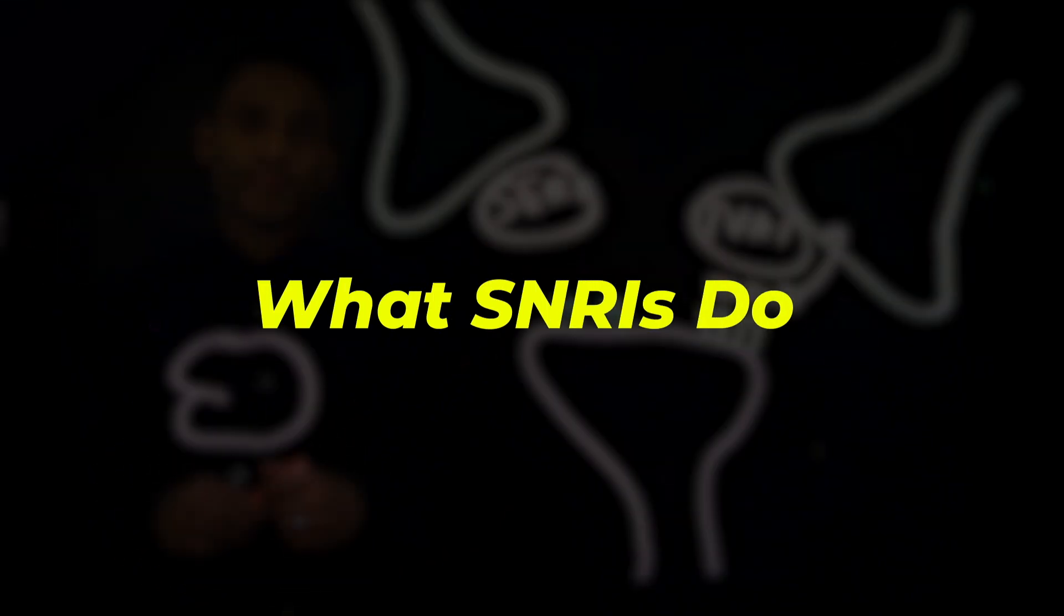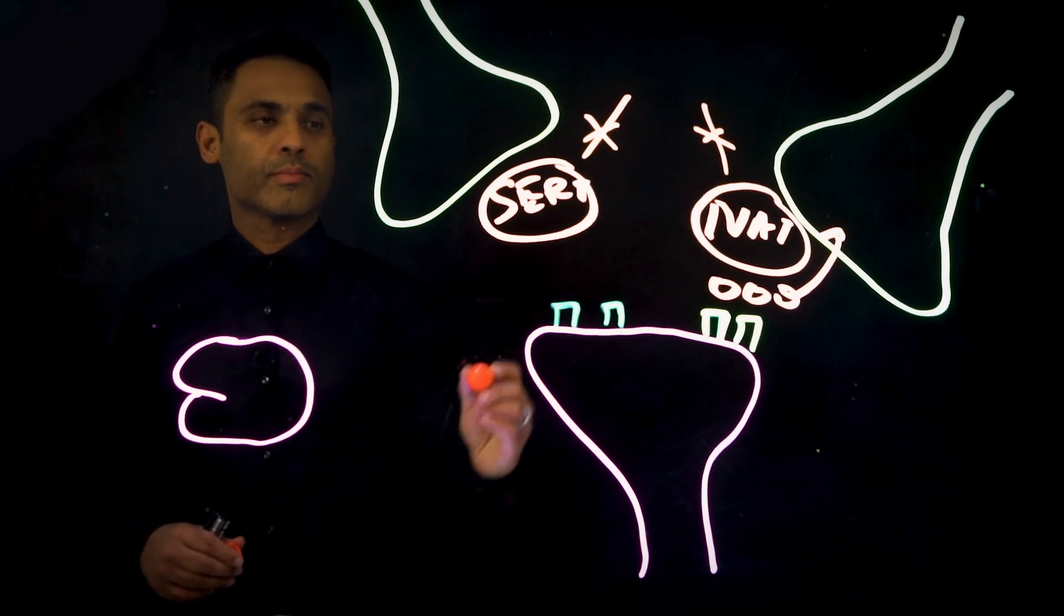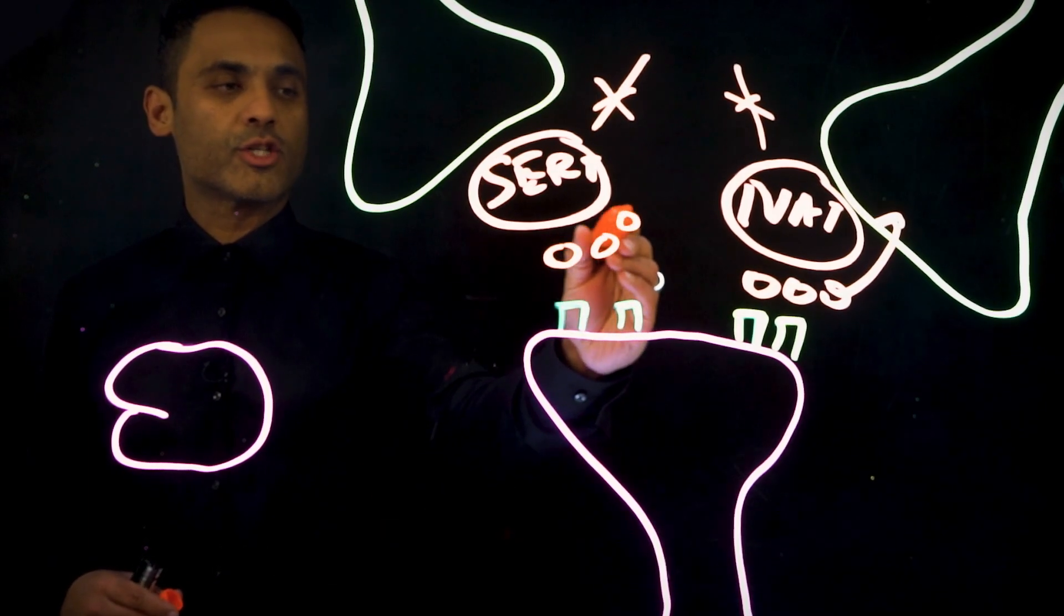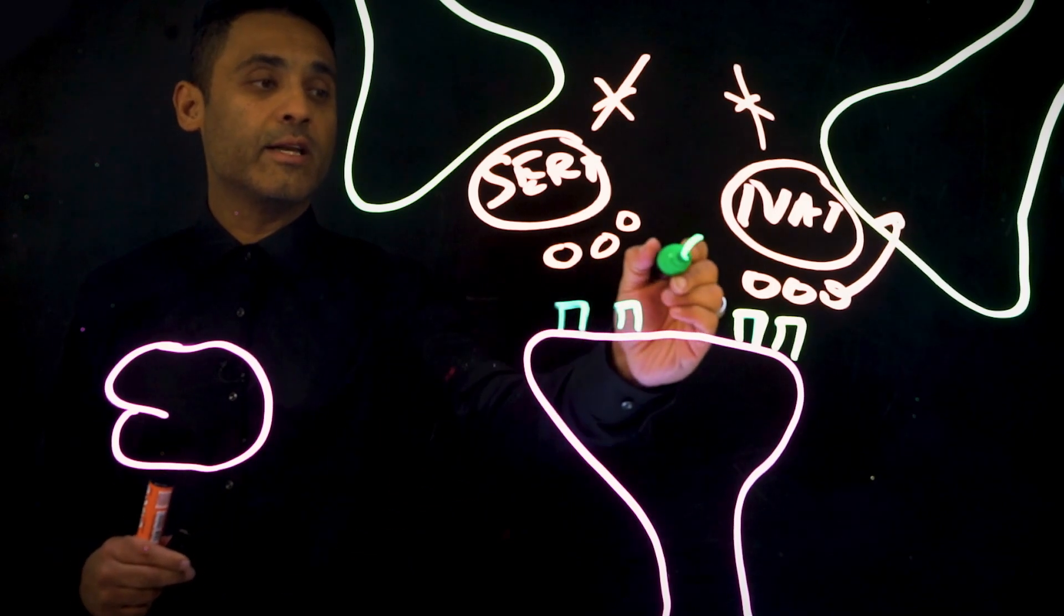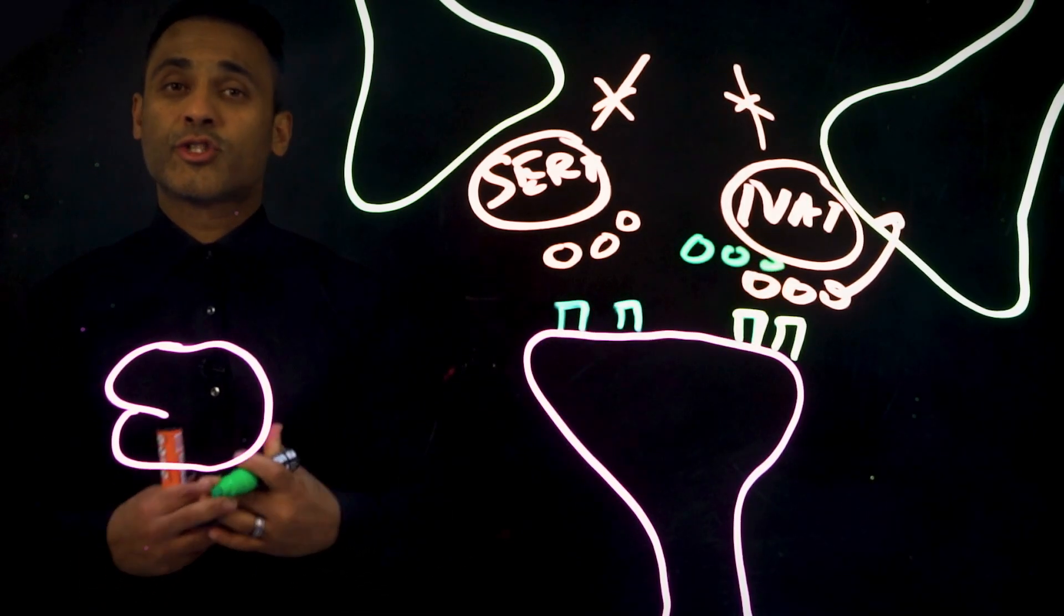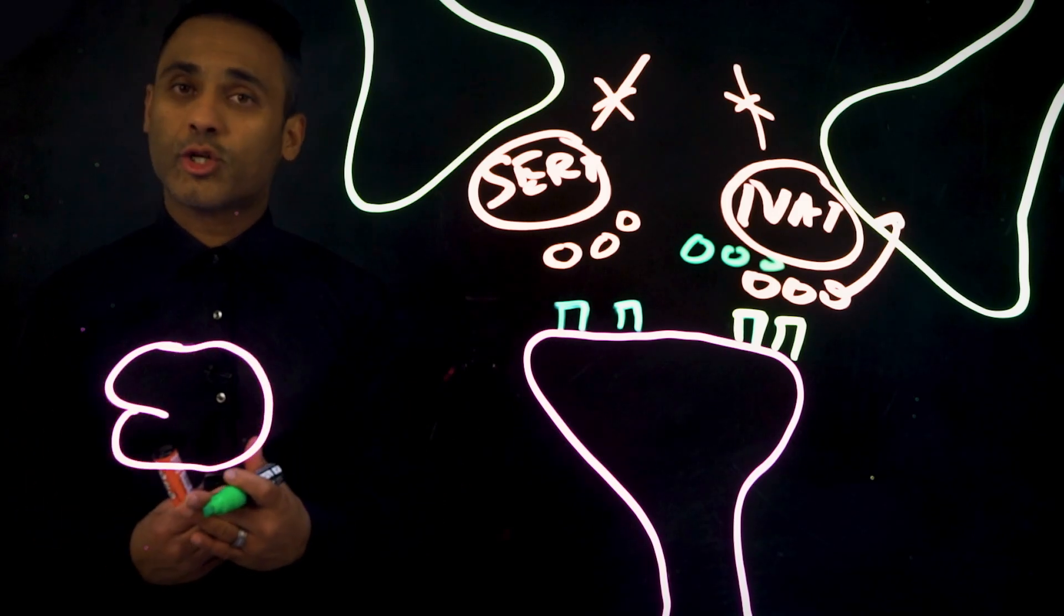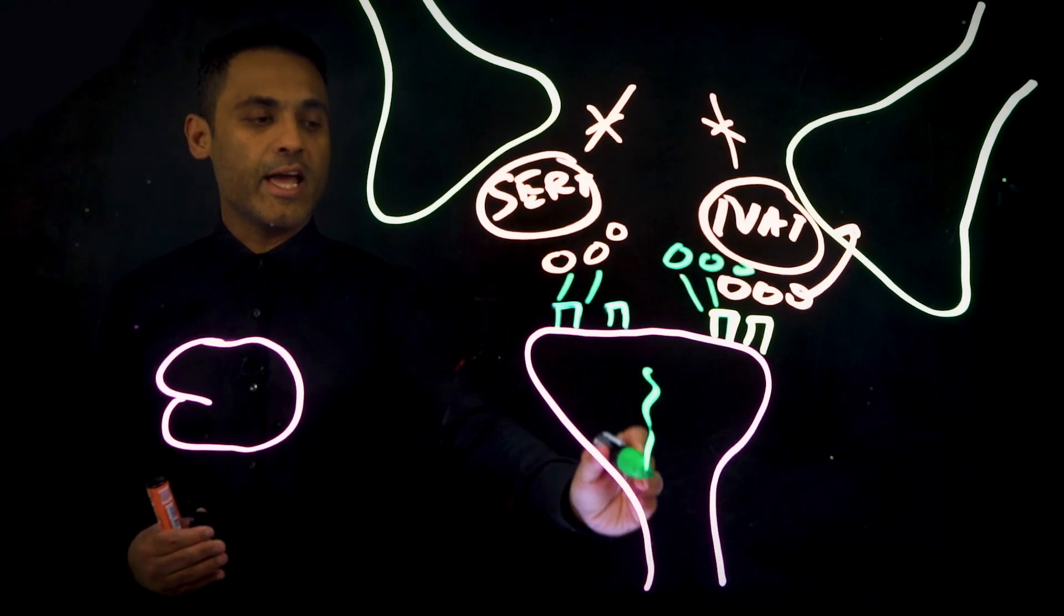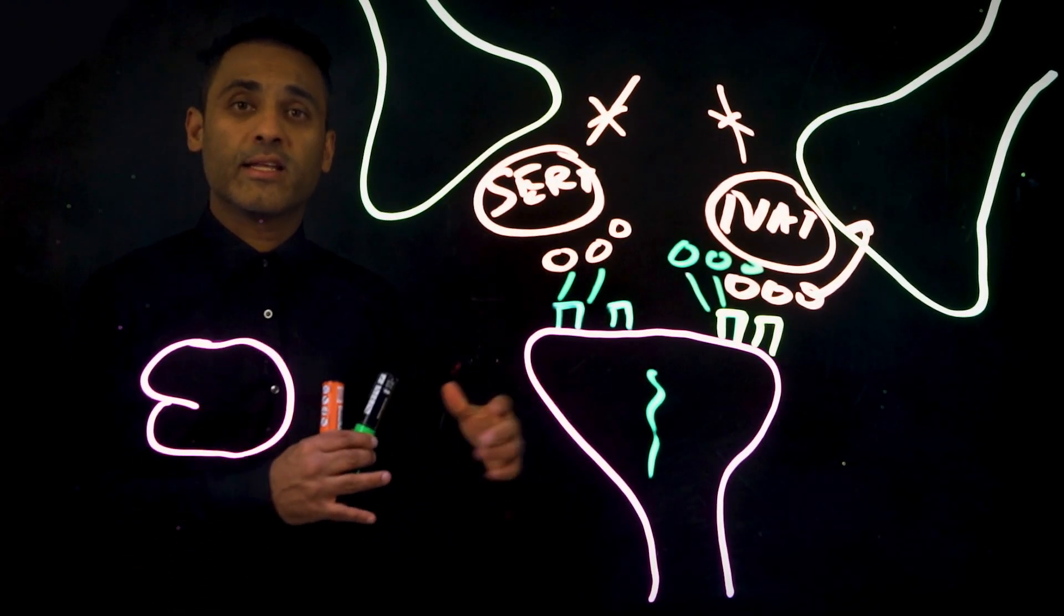What SNRIs do is they will inhibit both SIRT and NAT, and therefore there will be lots of serotonin and noradrenaline floating around in the synaptic cleft - so extracellular increase in noradrenaline and serotonin. Of course that will go and bind to these receptors, stimulating the postsynaptic neuron for an action potential, mediating the effects.